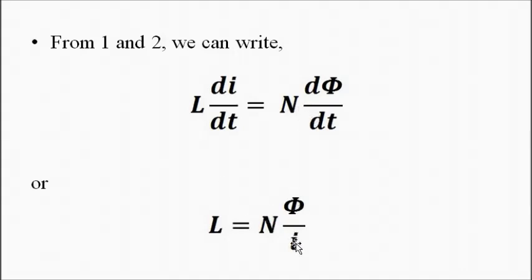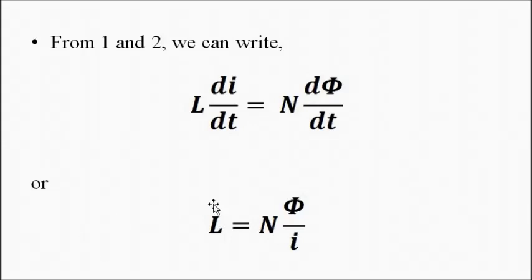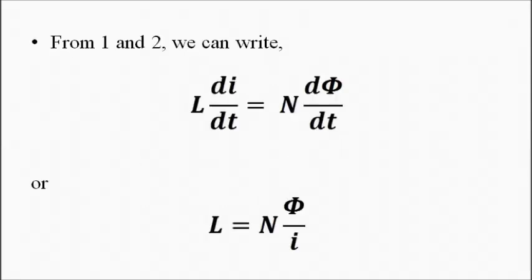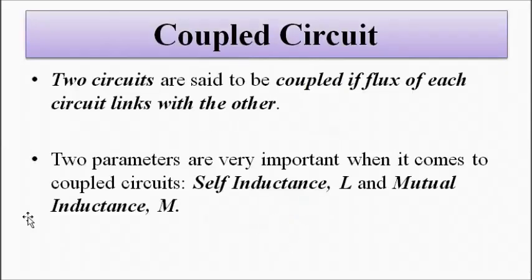I'm going in a quick way here — coupled circuits itself is a very vast chapter and we'll discuss it in the network theory section in detail. But here I'm going quickly so that we can take our discussions related to transformers a little bit forward. So we can write inductance as L = Nφ/I, where N is the number of turns of the coil, φ is the flux produced, and I is the circuit current.